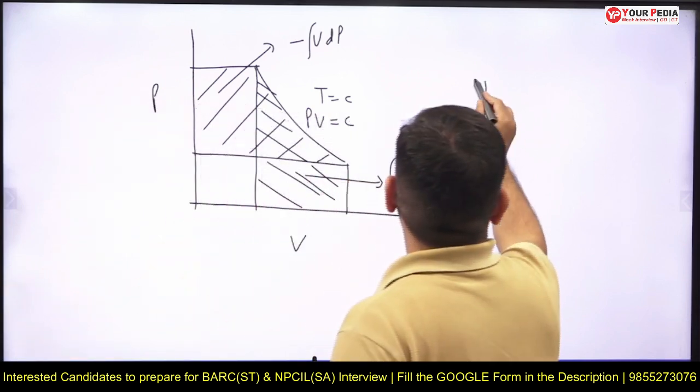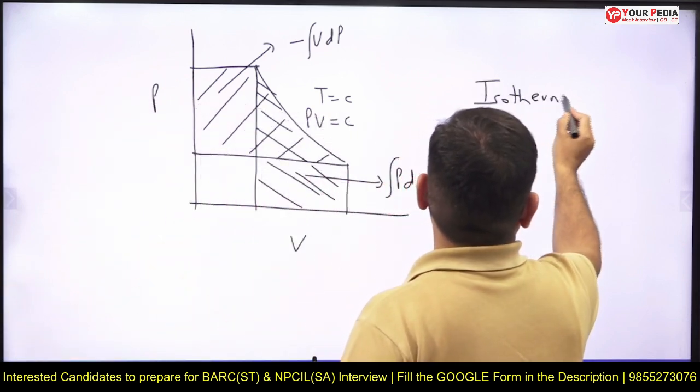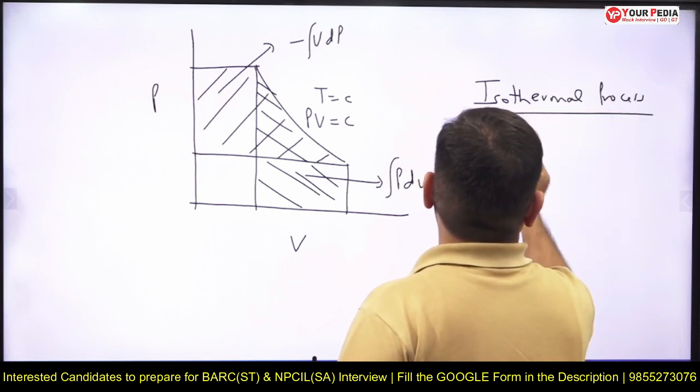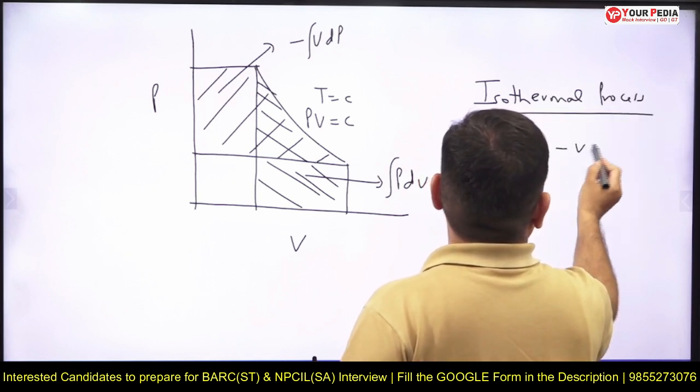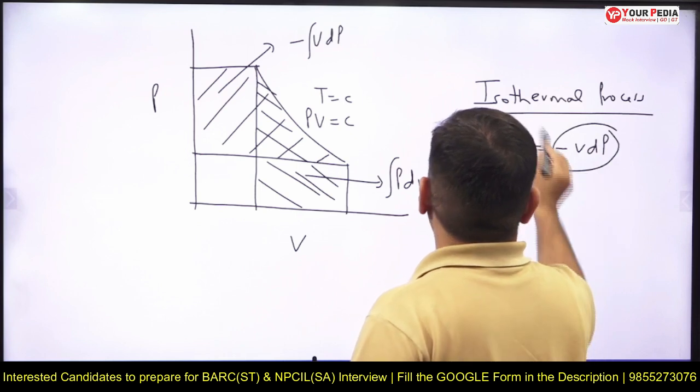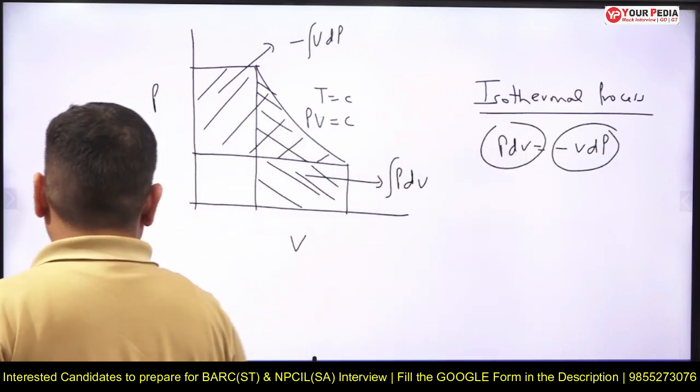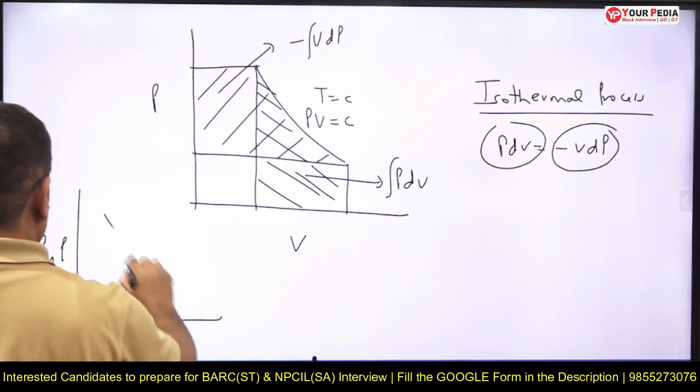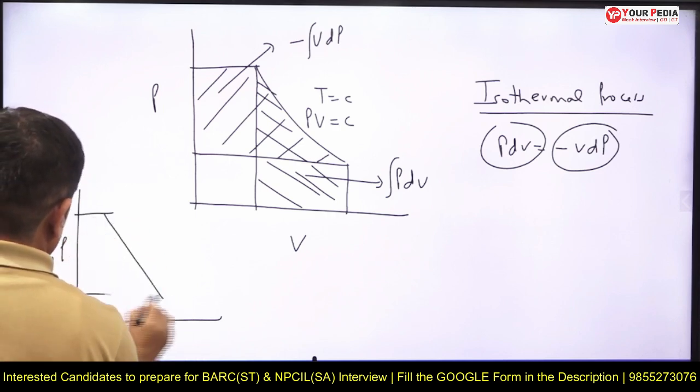And hence we can say for isothermal process, if the process is isothermal, then PdV is equal to minus VdP. And if you draw logarithmic P and logarithmic V graph, you will get something like this, and again in that you will find that these two areas under this straight line are going to be equal.